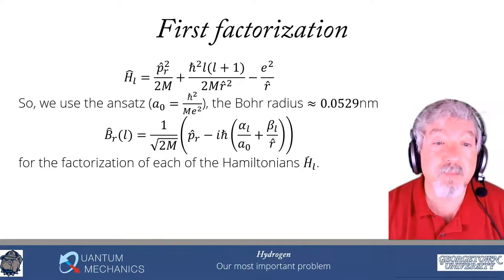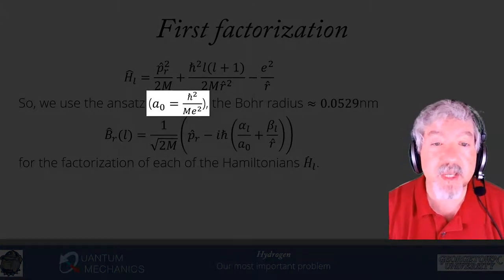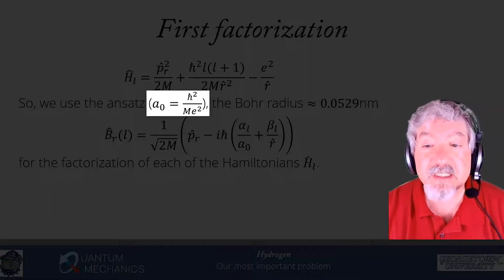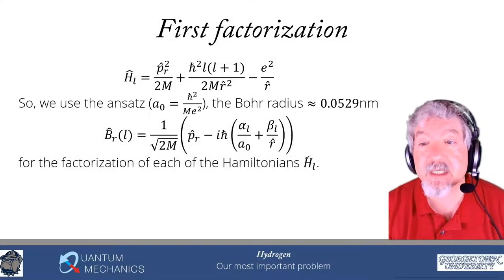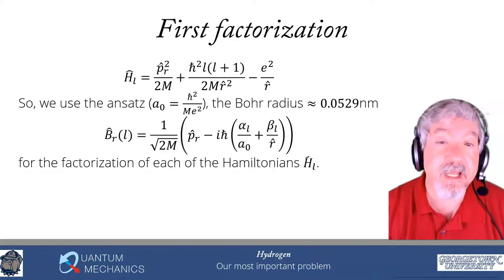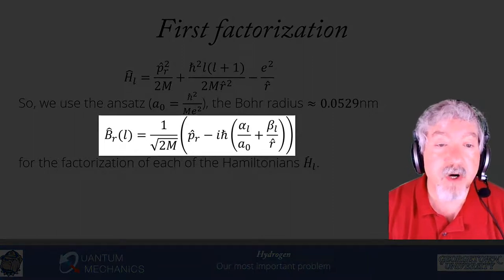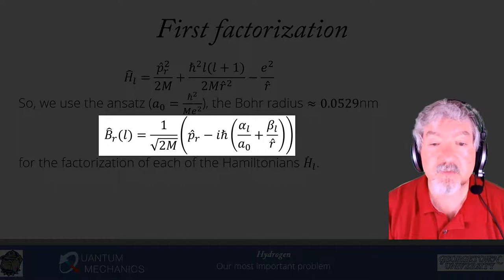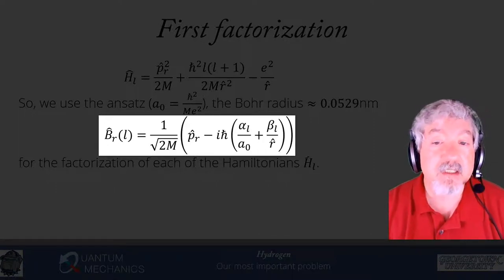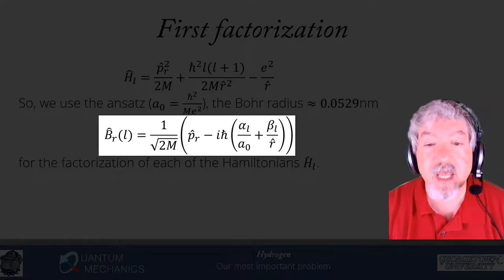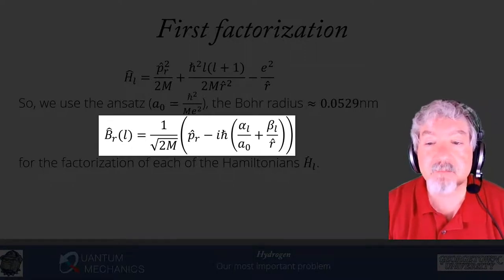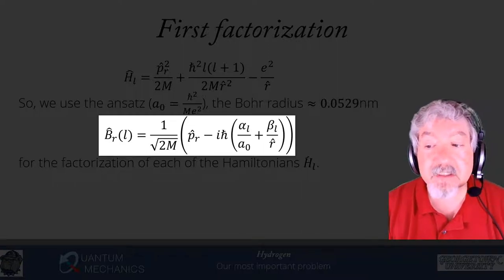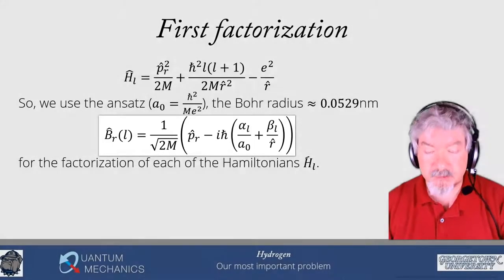I want to introduce the Bohr radius, a_0, defined as h-bar squared over me squared. If you calculate it, it's about 0.0529 nanometers, or 0.529 angstroms. The lowering operator B_r of L has the factor 1 over square root of 2m, the radial momentum minus i h-bar times k times the super potential. I'll write that super potential as alpha_L over a_0 plus beta_L over R, where alpha_L and beta_L must both be dimensionless constants, since h-bar over a length has dimensions of momentum.